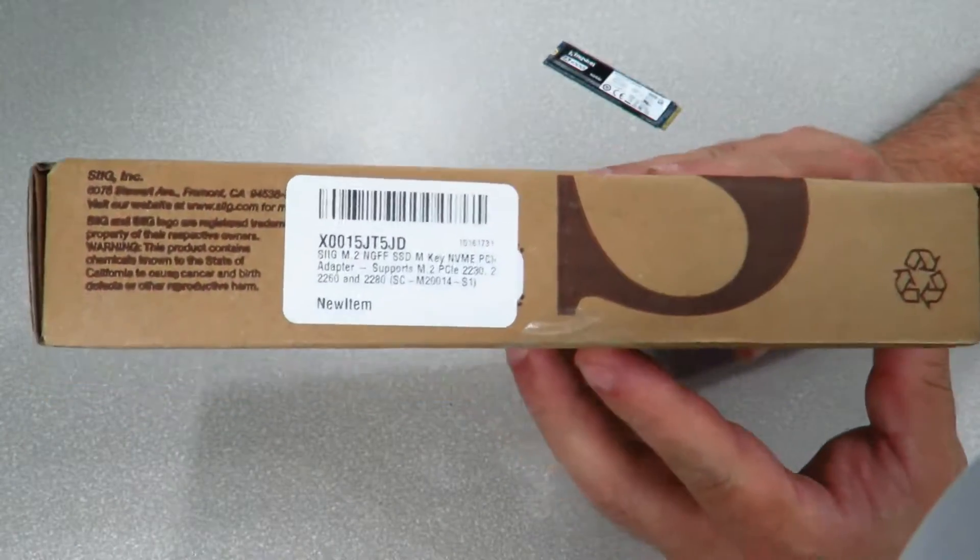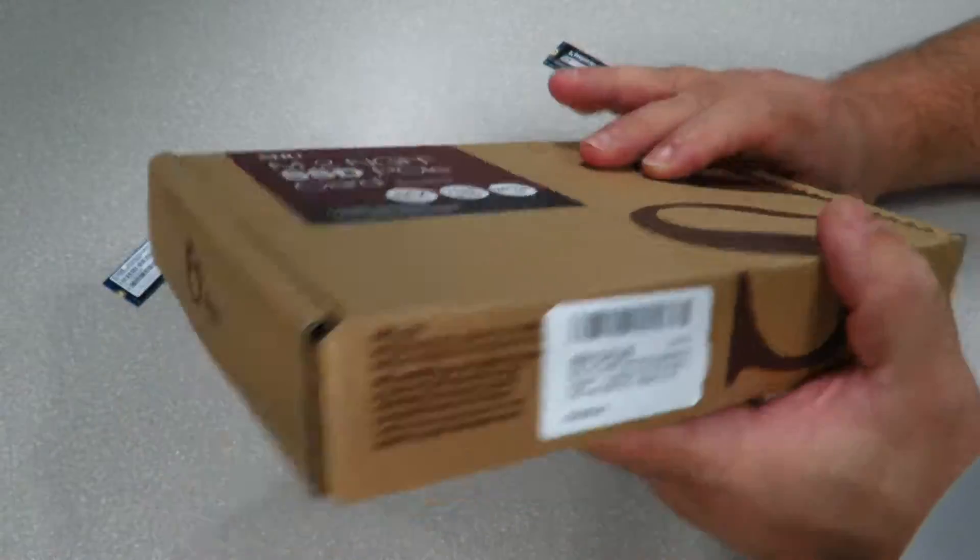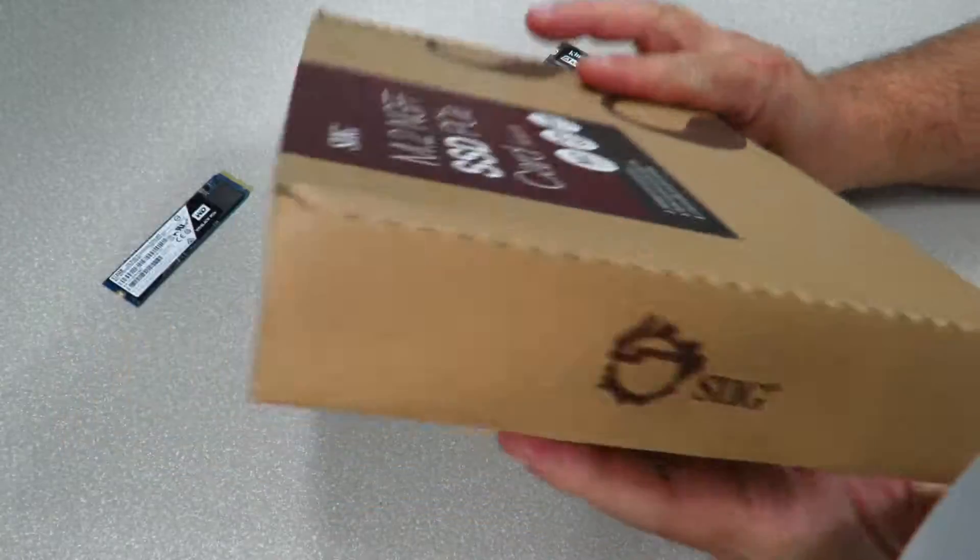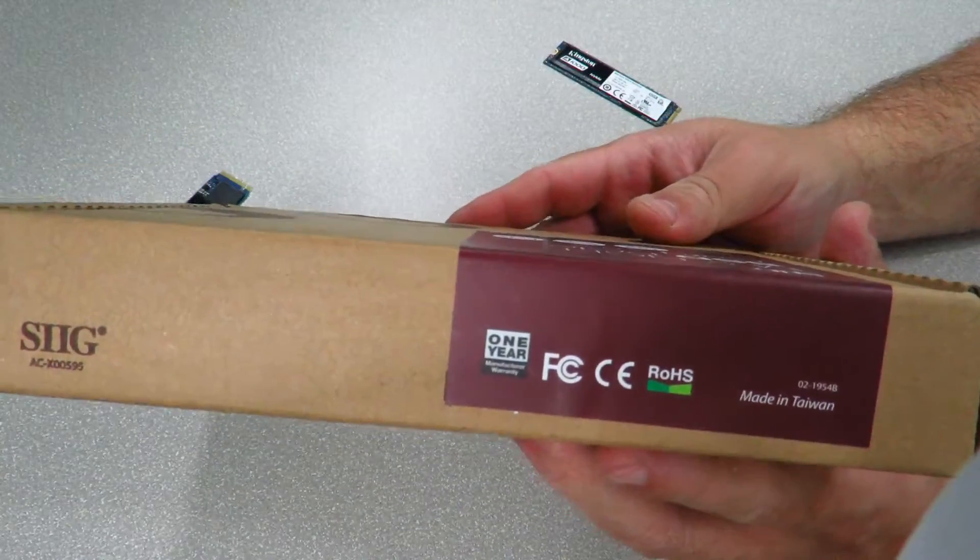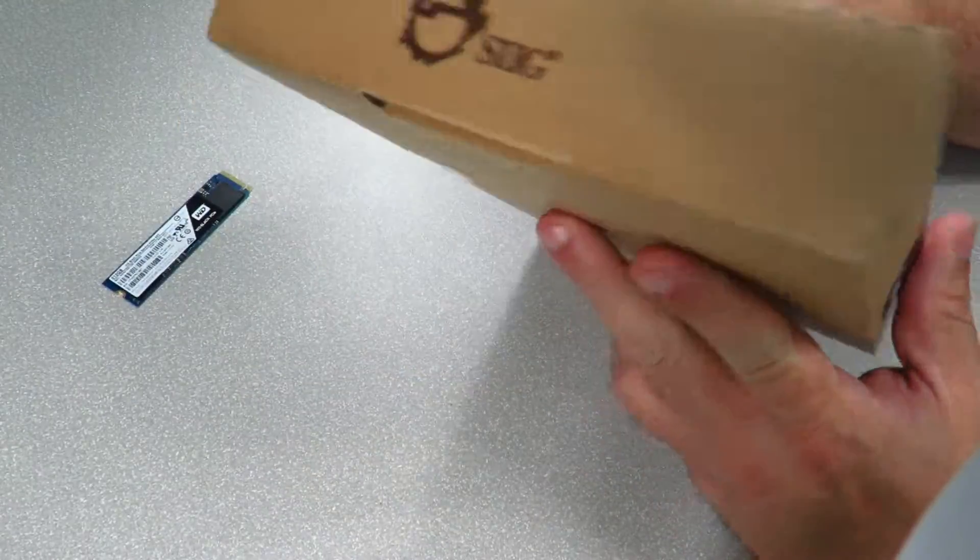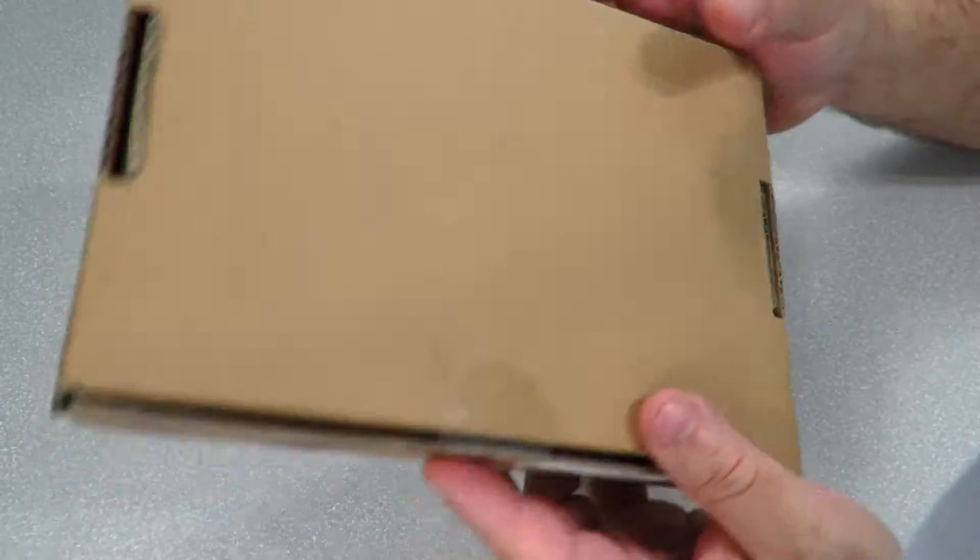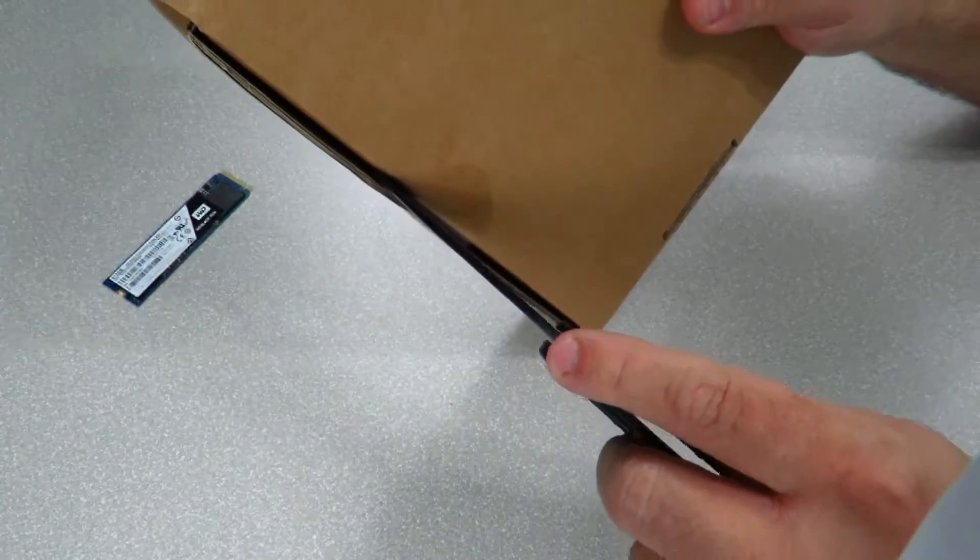On the bottom we have the UPC, serial number, model number, all that good stuff. Side just says SIIG. Some of their certificates, very important - RoHS compliant, SIIG, and nothing else. Let's go ahead and open this up.